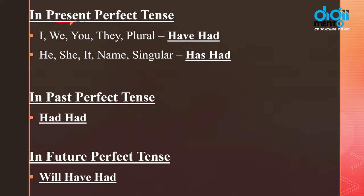Now let's talk about present perfect tense. Our singular subjects — he, she, it, ya kisi ka naam, ya some singular thing — unke saath hamaara helping verb 'has' hota hai aur main verb 'had' hota hai. Kyunki jab bhi hum perfect tense ki baat karte hain, hum hamesha verb ki third form — that is your past participle — use karte hain. Aur 'have' ka past participle again 'had' hai.